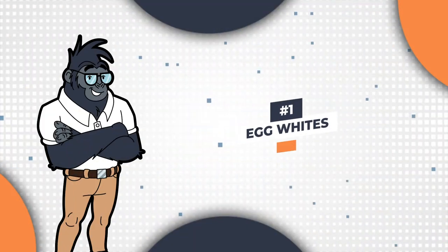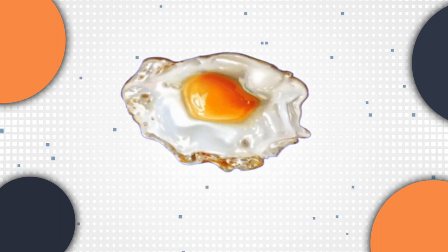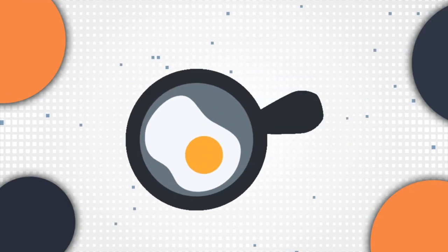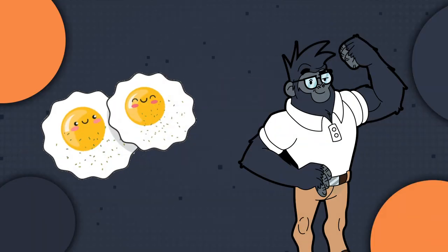Number 1. Egg whites. One of the best things about egg whites is how easy they are to prepare. Just take your carton of egg whites straight from the fridge, pour them into a frying pan, and you'll have a delicious and nutritious meal in under 5 minutes. With about 4 grams of protein per typical egg white, it's easy to see why they're such a popular protein source for fitness enthusiasts.